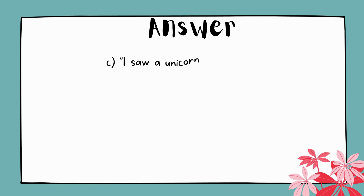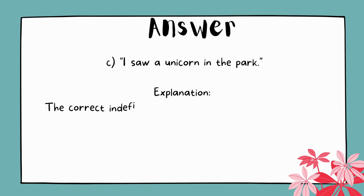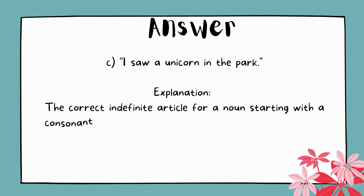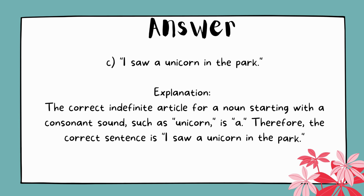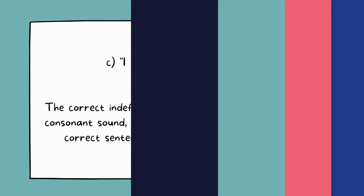The answer is C. I saw a unicorn in the park. Explanation: The correct indefinite article for a noun starting with a consonant sound, such as 'unicorn,' is 'a.' Therefore, the correct sentence is 'I saw a unicorn in the park.'